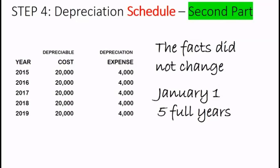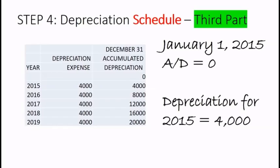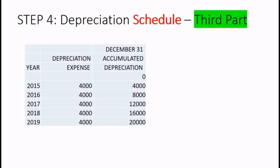If we had put this asset into service in the middle of the year, the depreciation expense column would look a little different, but that's for another video. The third part of the depreciation schedule is the accumulated depreciation amount. When we put this asset into service, accumulated depreciation was zero, and our depreciation expense is $4,000 each year. So taking zero of accumulated depreciation and adding the depreciation expense, we get $4,000. Continuing: $4,000 plus $4,000 is $8,000; $8,000 plus $4,000 is $12,000, and so on.